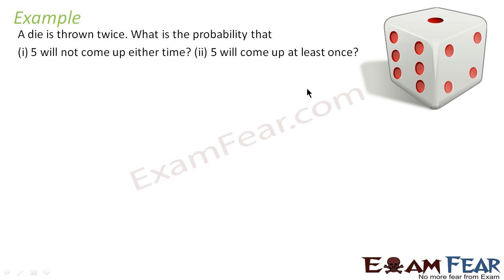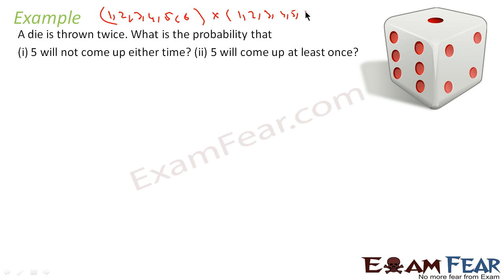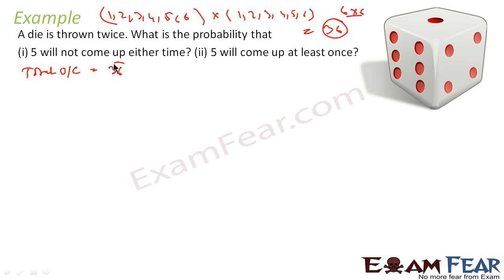A die is thrown twice. What is the probability that 5 will not come up either time, and that 5 will come up at least once? When you throw a die, you get 1, 2, 3, 4, 5, or 6. Since it is thrown twice, the total number of outcomes is 6 × 6 = 36.